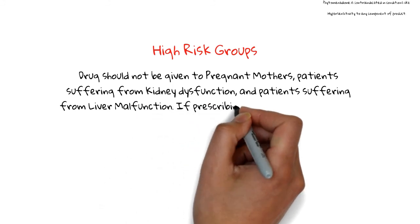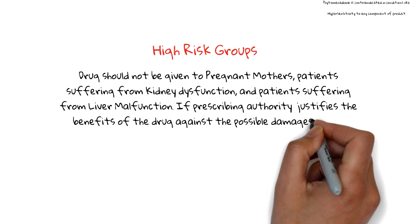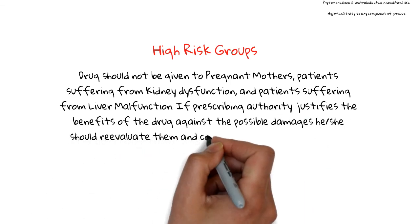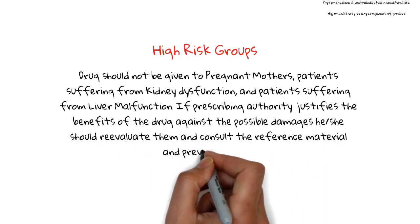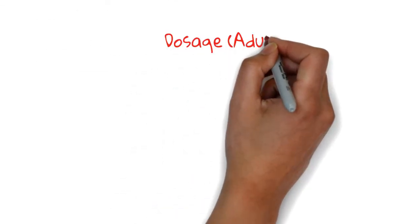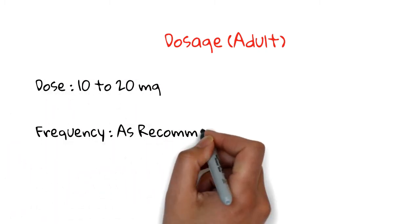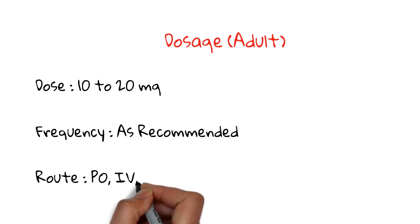If prescribing authority justifies the benefits of the drug against the possible damages, he or she should reevaluate them and consult the reference material and previous studies. Now come to its dosage: adult dose 10 to 20 mg, frequency is recommended, route is oral, IV, IM.